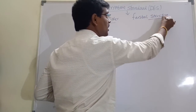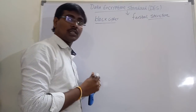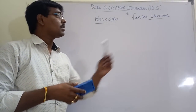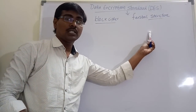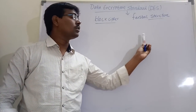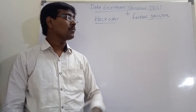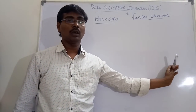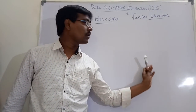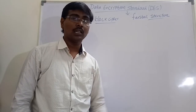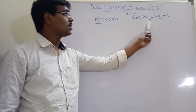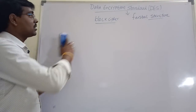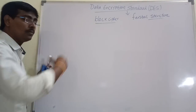We already discussed Feistel structure: simply the plaintext is divided into equal number of halves, an operation is performed on one half, and then some XOR operations are performed.